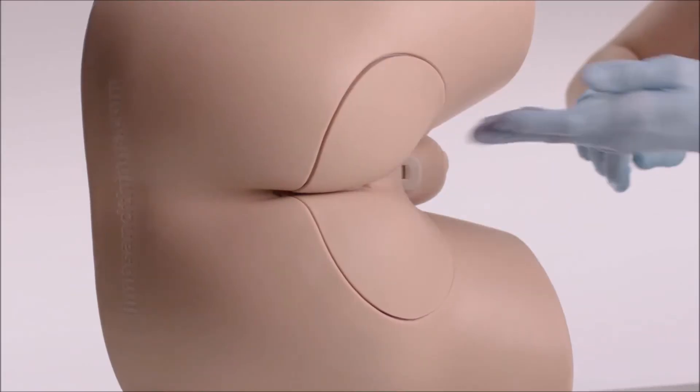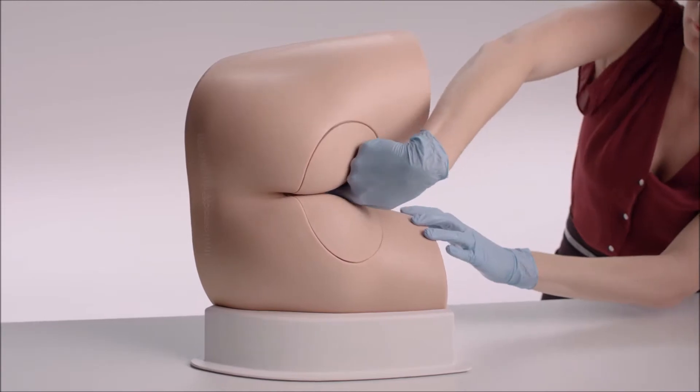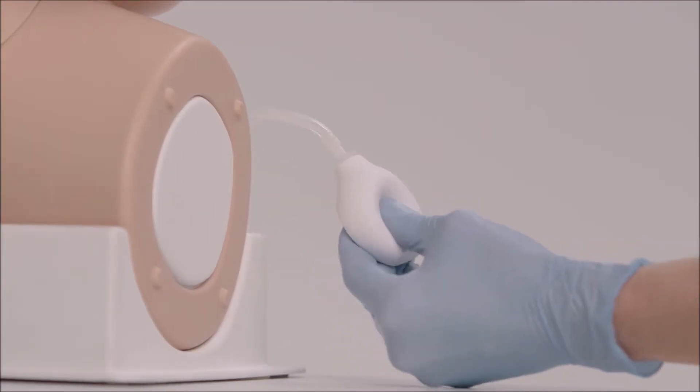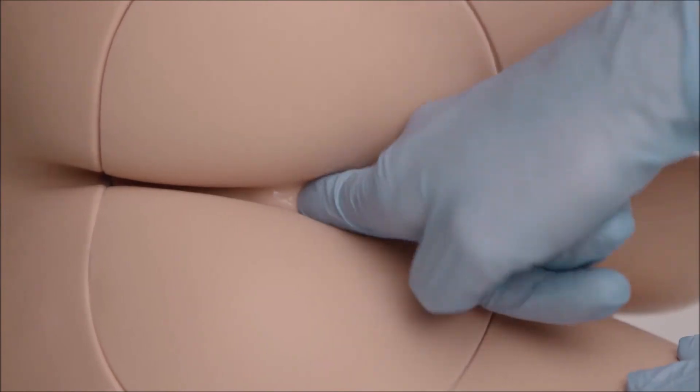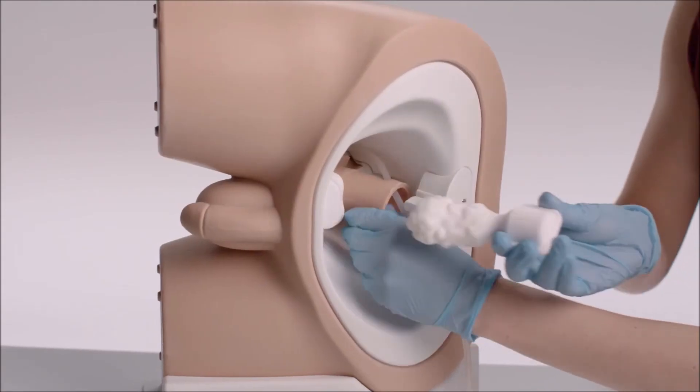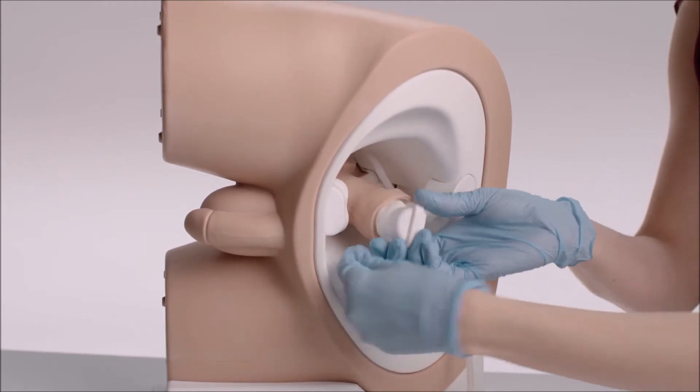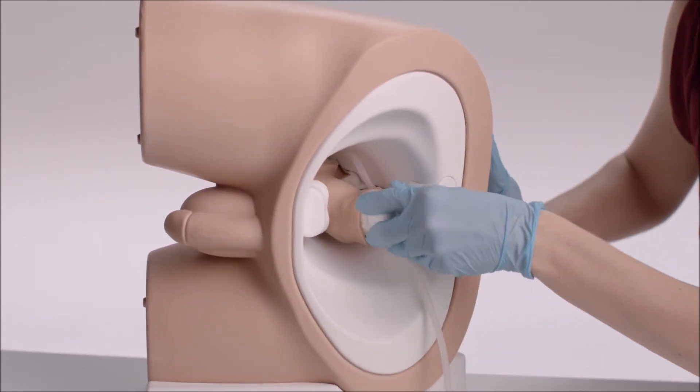Both the Advanced and Standard models feature soft, partible buttocks and a contractible anal sphincter, allowing the trainee to learn how to assess anal tone. Impacted fecal matter can be added in conjunction with any of the prostates to help students learn to distinguish this common finding.